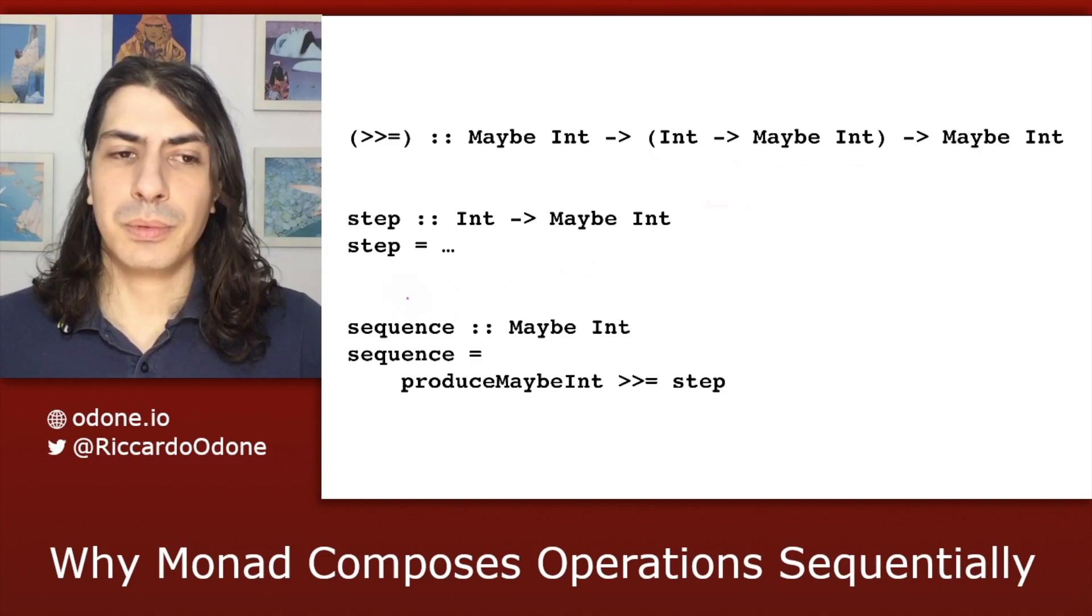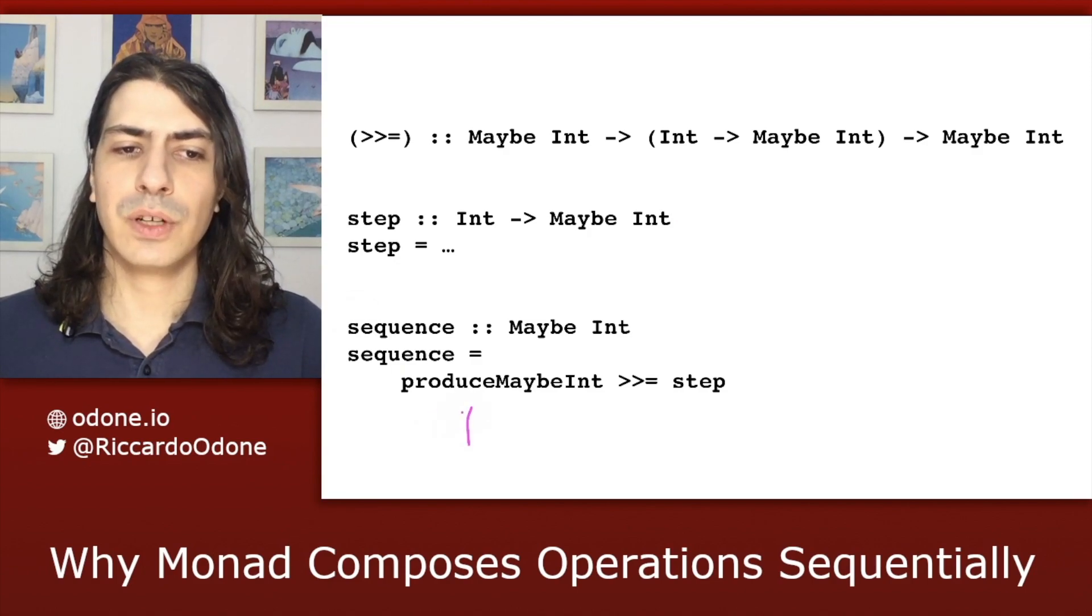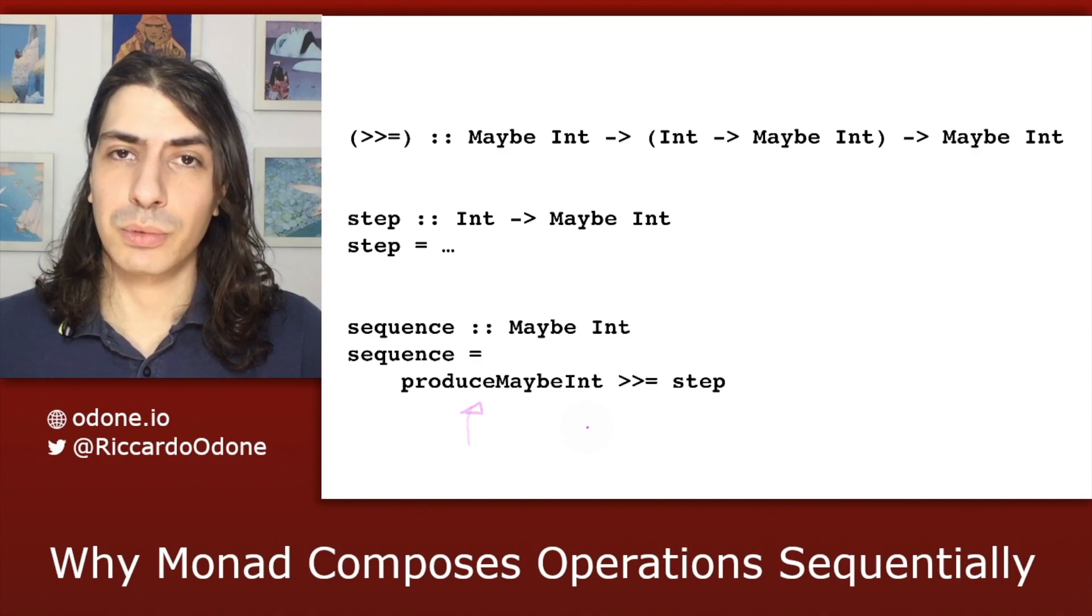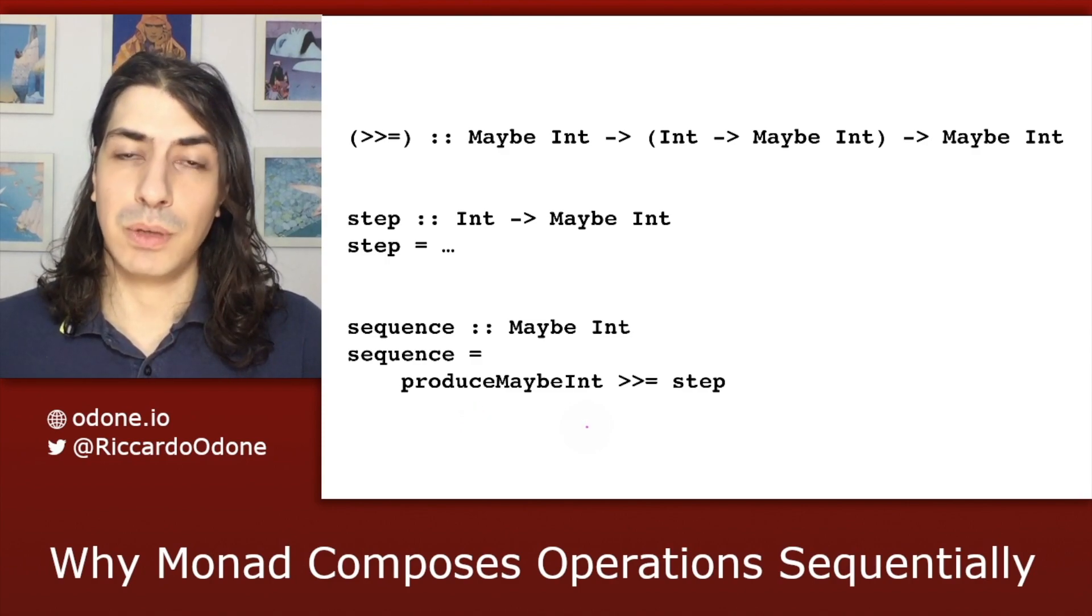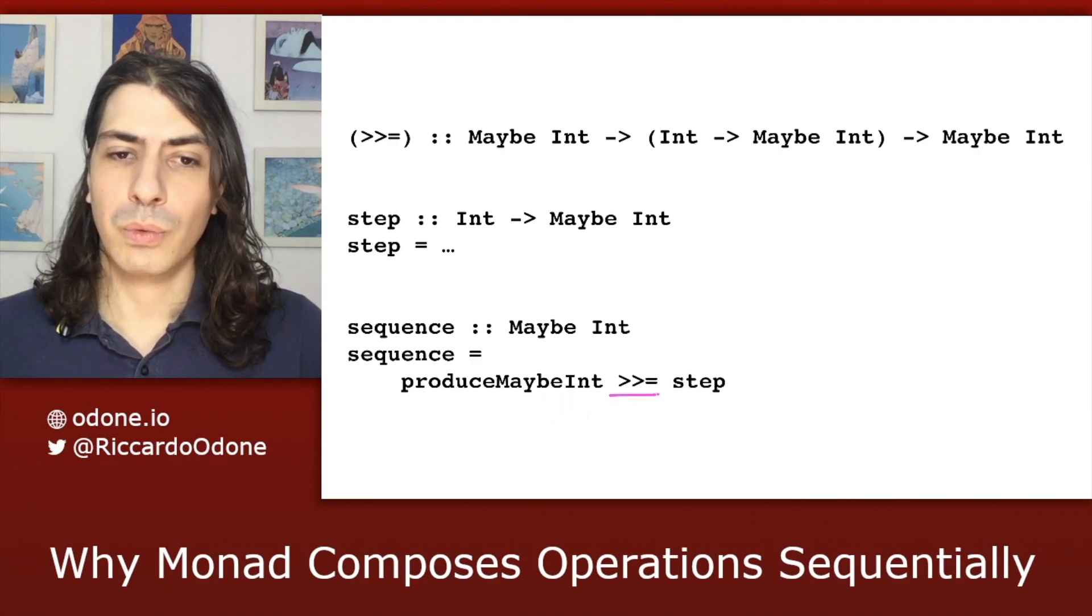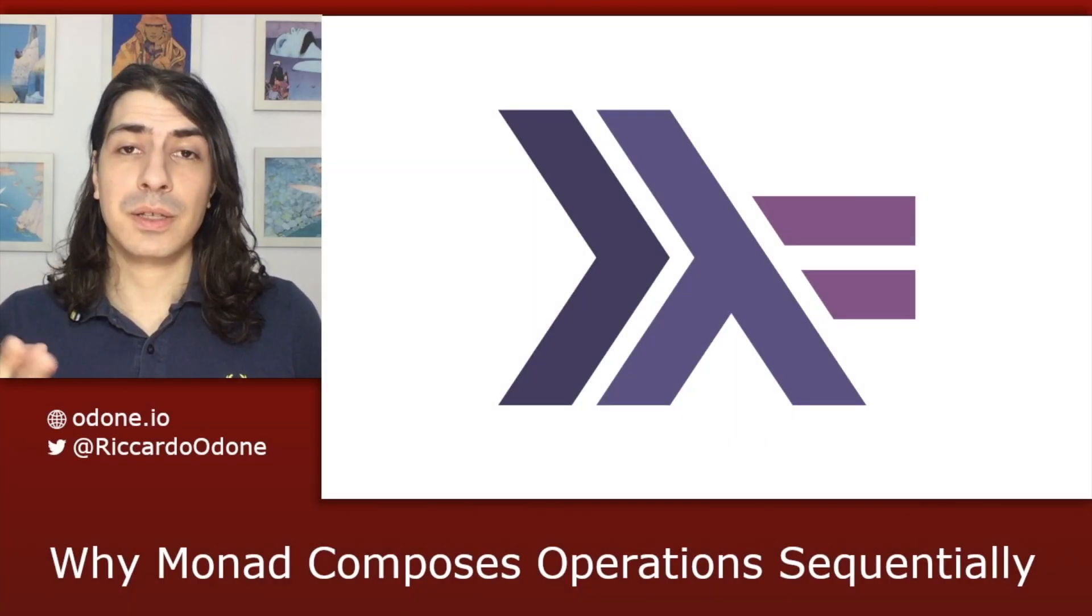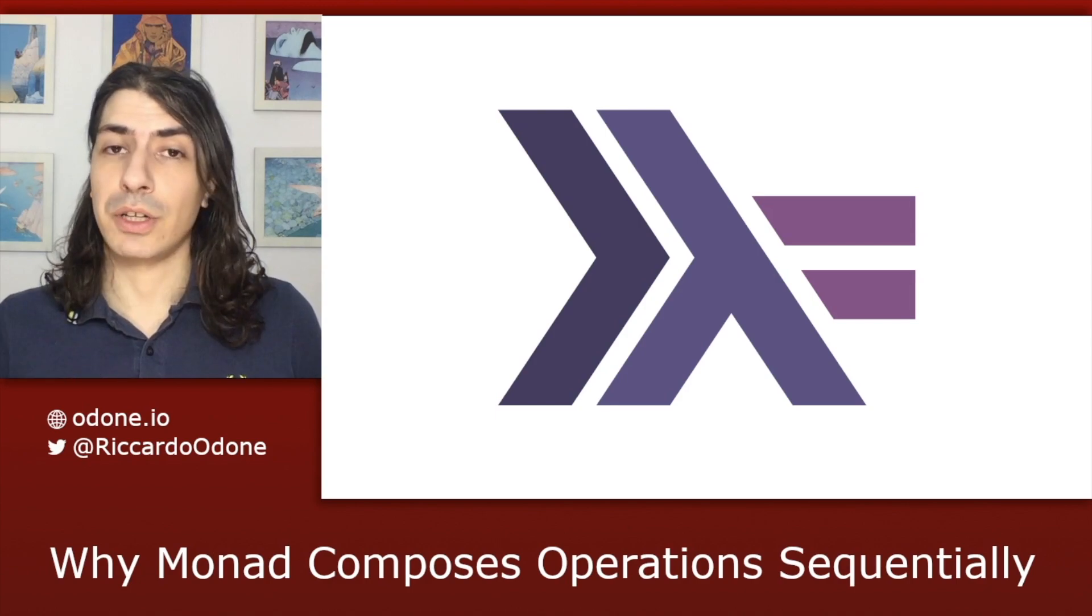With this setup, we can build our sequence of operations by calling first the function that eventually, but only eventually, produces a value of type maybe int. And then, only then, when that value is produced, we can sequence another operation by using bind. And that is why monads compose operations sequentially.